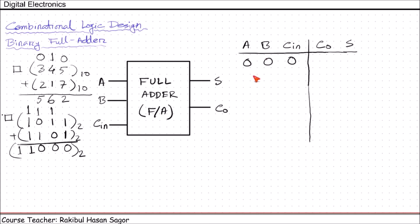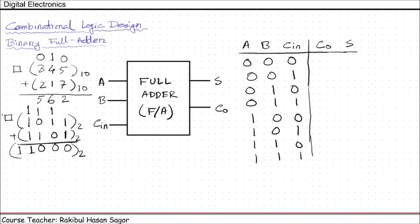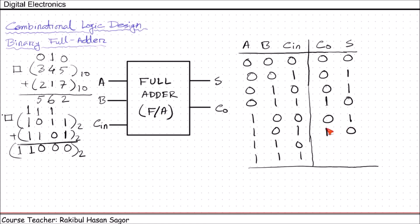Using three bits, we can have eight combinations: 0 0 0, 0 0 1, 0 1 0, 1 0 0, 1 1 0, 0 1 1, 1 0 1, 1 1 1. When we have 0 0 0, sum is 0 and carry is 0. 0 plus 0 plus 1 gives sum 1, carry 0. 0 plus 1 plus 0 gives sum 1, carry 0. 0 plus 1 plus 1 gives sum 0, carry 1. 1 plus 0 plus 0 gives sum 1, carry 0. 1 plus 0 plus 1 gives sum 0, carry 1. 1 plus 1 plus 0 gives sum 0, carry 1. 1 plus 1 plus 1 gives sum 1, carry 1. This is the truth table for the full adder.